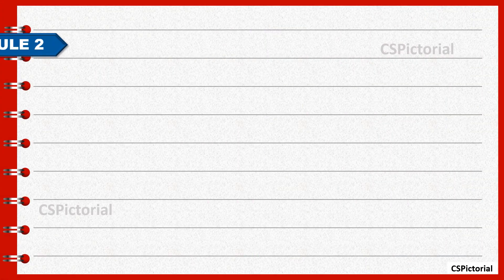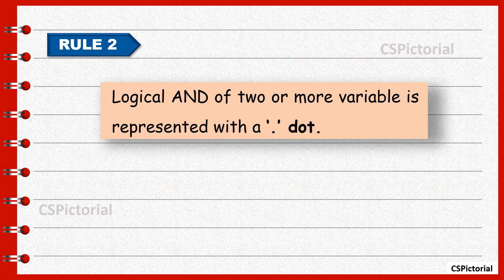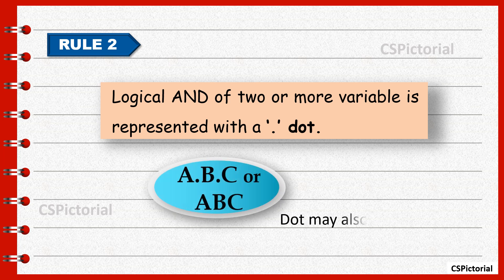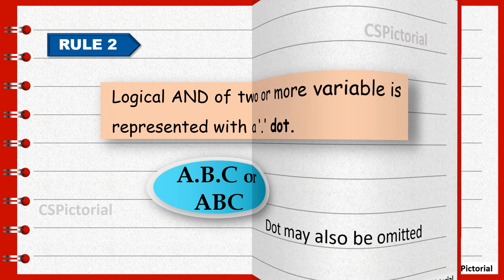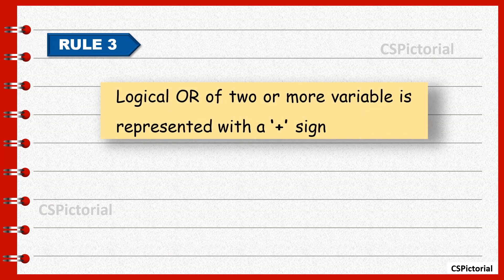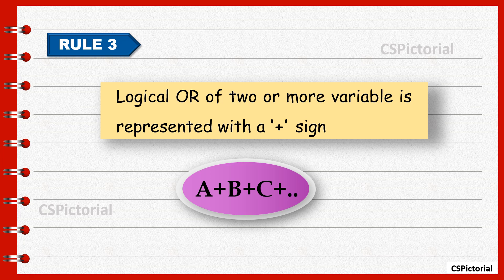The second rule of a Boolean expression is that the logical AND of variables is represented with a dot, as A dot B dot C etc. The dot may also be omitted. The third rule is that the logical OR of variables is represented with a plus sign, as A plus B plus C etc.